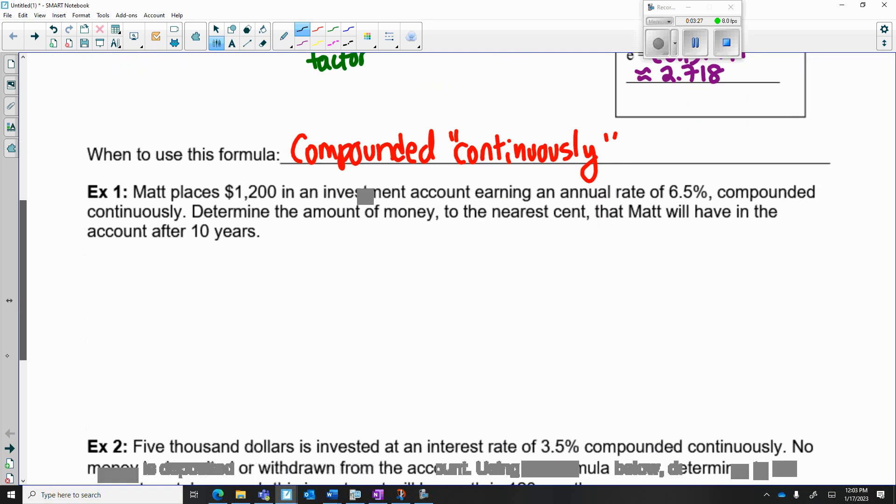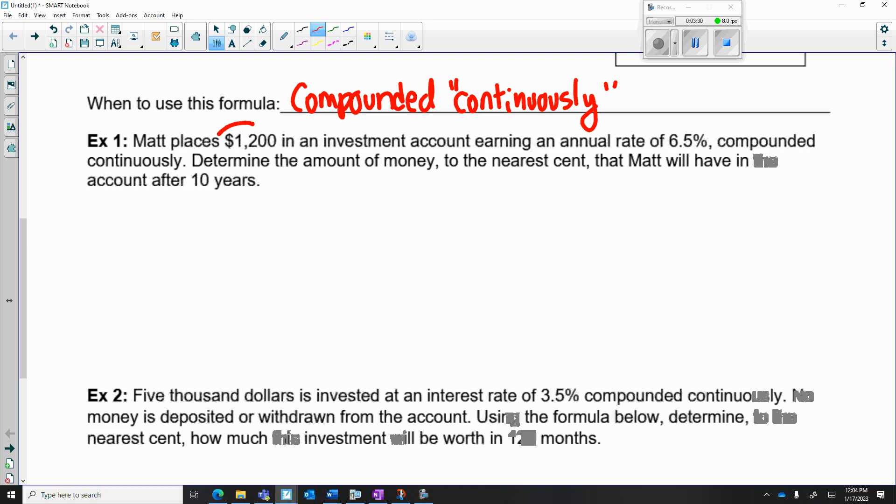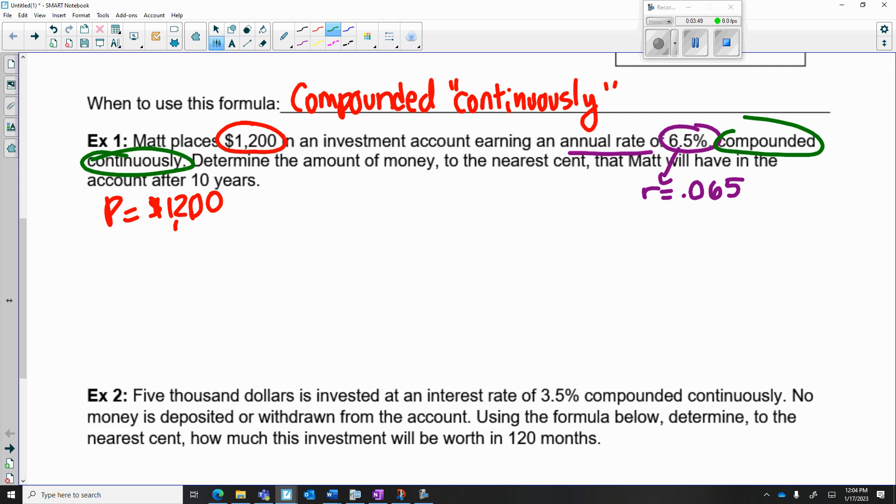Matt places $1200 in the bank, so that's your initial amount or principal amount, earning an annual rate - so if it says annual you think it's once a year - that's 0.065 as a decimal. It says compounded continuously, so I would star that and make a note to self that means you have to use the PERT formula, A = Pe^rt. Determine the amount of money to the nearest cent, so you're looking for the A, the final amount that Matt will have in the account after 10 years, so 10 is t.